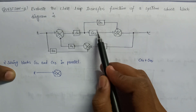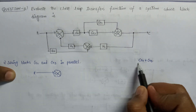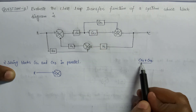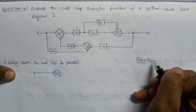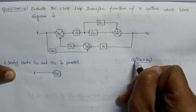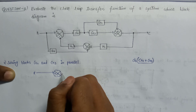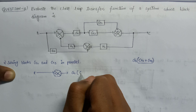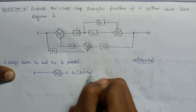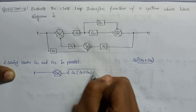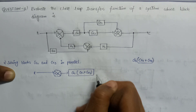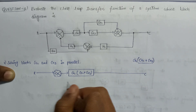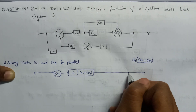Now let us redraw the whole block diagram. Since G2 and G3 are in parallel, their equivalent is G2 plus G3. Also, G1 is in series with this equivalent, so it will get multiplied with G1. We can directly write this equivalent as G1(G2 plus G3), and here is C, the output, and here is the takeoff point.